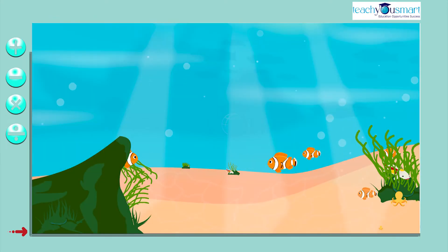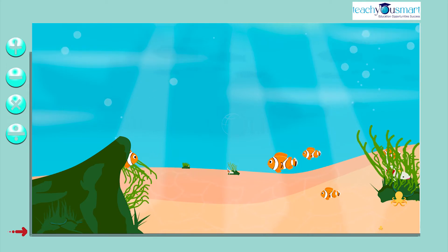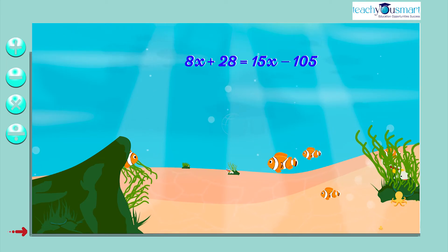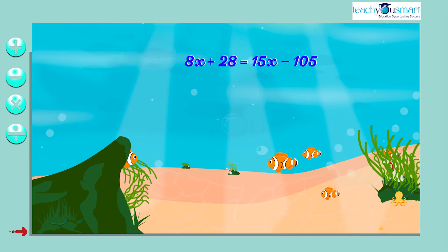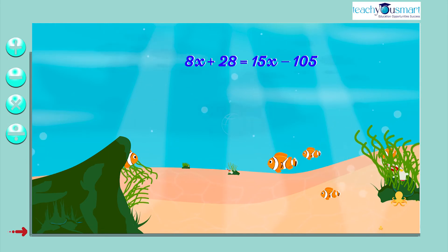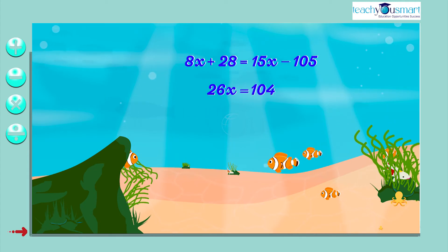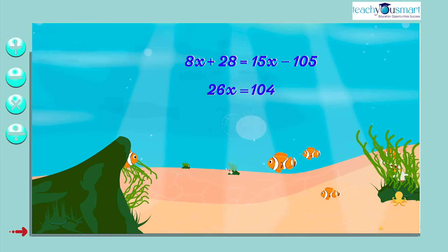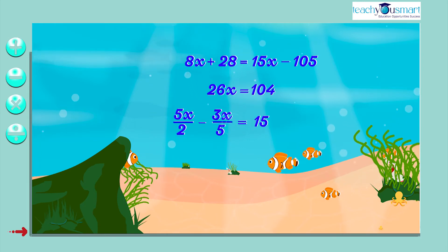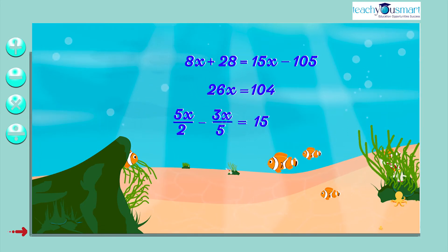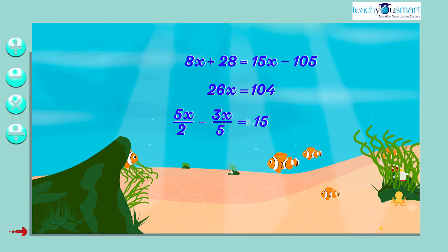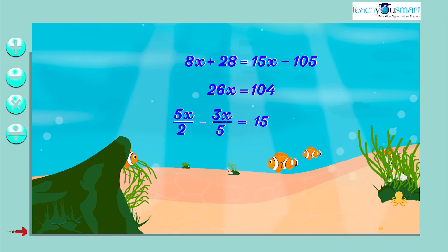In the previous classes, we have seen many linear equations like 8x plus 28 equals 15x minus 105, 26x equals 104, 5x by 2 minus 3x by 5 equals 15. These linear equations are in a simpler form.